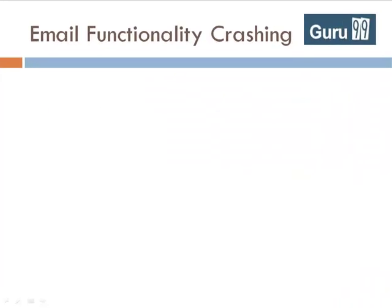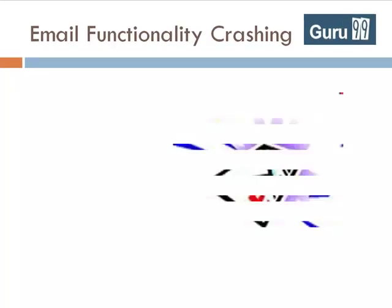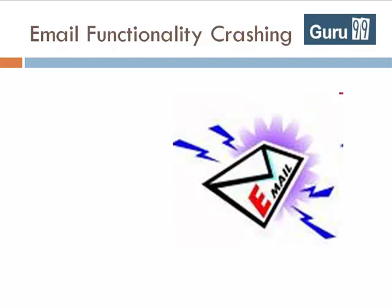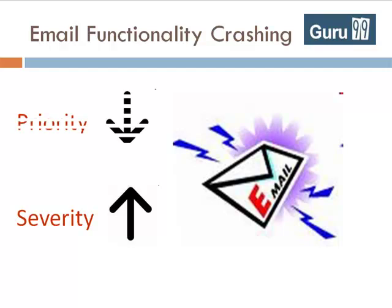Likewise, a defect could be high severity but low priority. Suppose there is a problem with the email functionality of a flight reservation application. This defect has high severity since it causes the application to crash. But the functionality is scheduled to release in the next cycle and can be fixed later, which makes it a low priority.